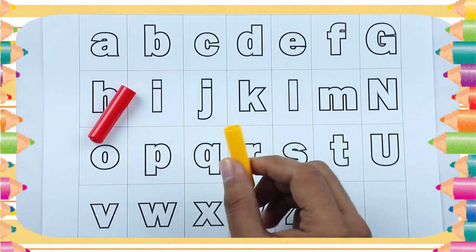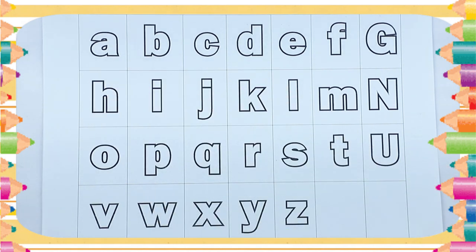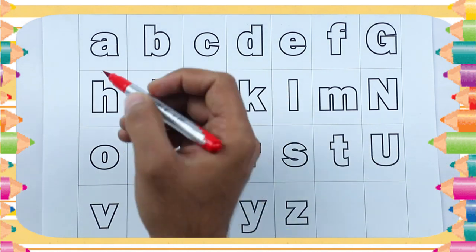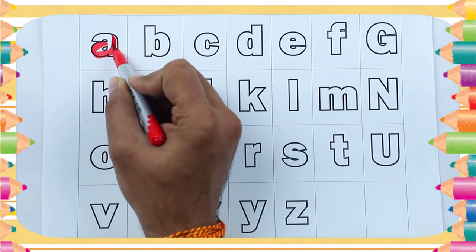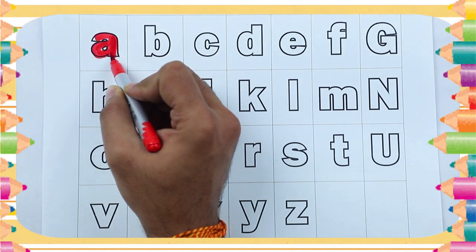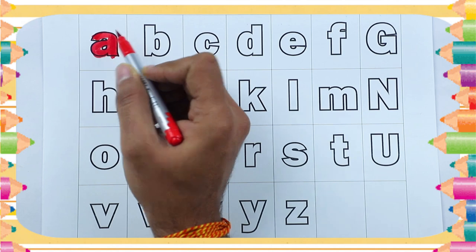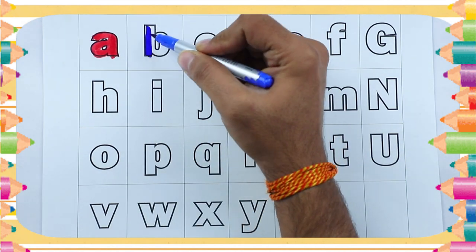Number one, small a. This is small a. A for apple. Small b, b for ball.